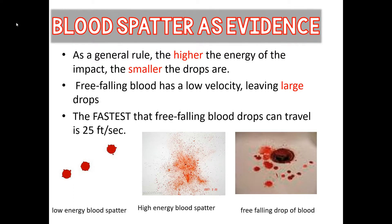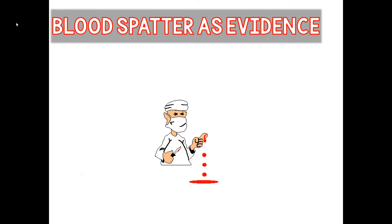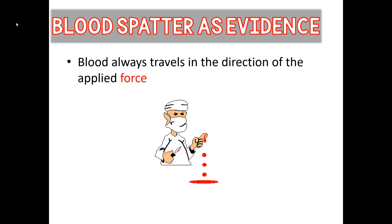The fastest that free-falling blood drops can travel is about 25 feet per second — that is a passive drop falling under the force of gravity. Another rule to note is that blood always travels in the direction of the applied force. You want to put this in your notes: blood always travels in the direction of the applied force, which you may recognize from physical science or physics.